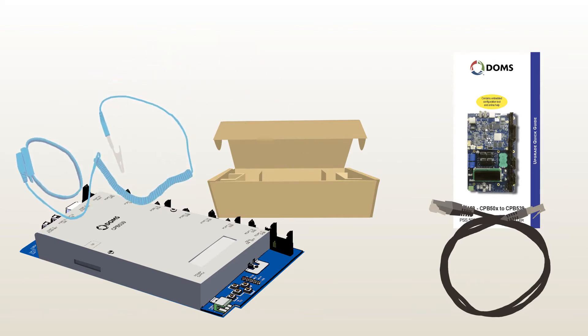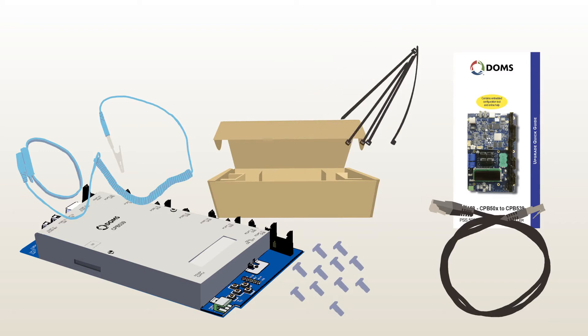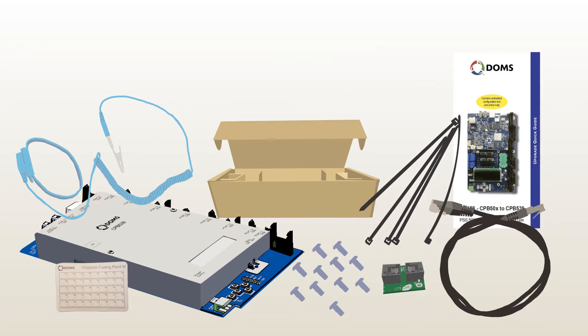One ESD wrist strap and a bag containing 11 Torx screws, five cable ties, one ethernet card, and a fueling point ID label.